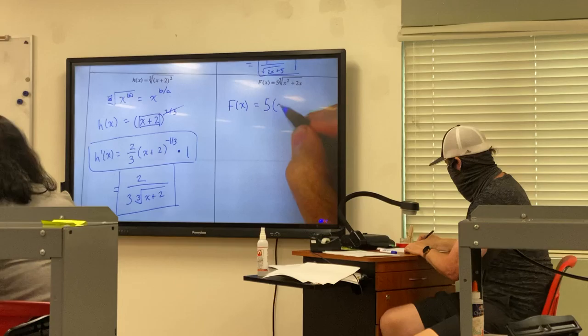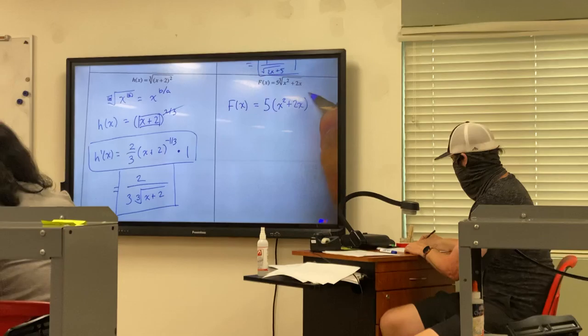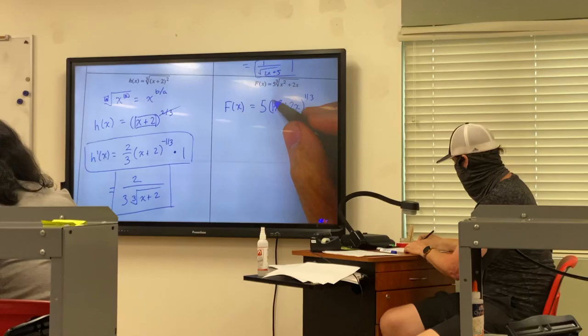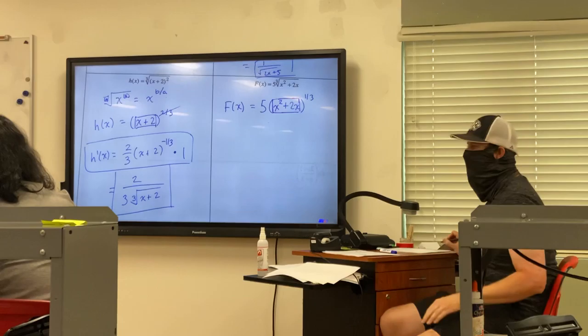F of x equals 5, just going to stay in front, and this is x squared plus 2x, close parentheses, all to the power 1 over 3. So what's going to be my box here? That inside x squared plus 2x.